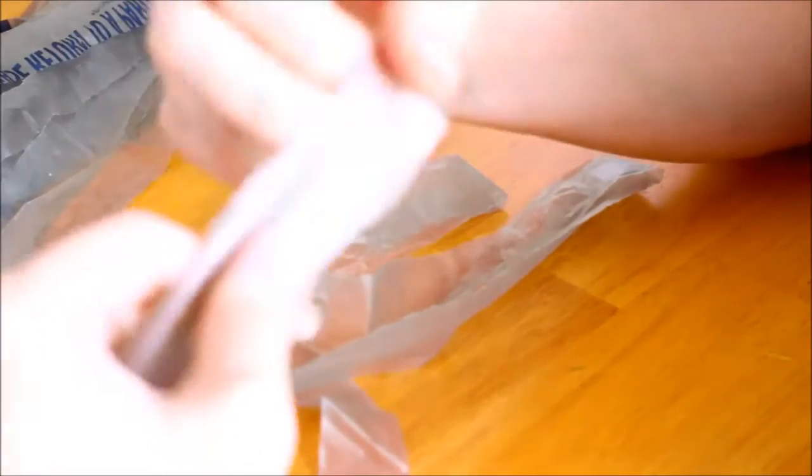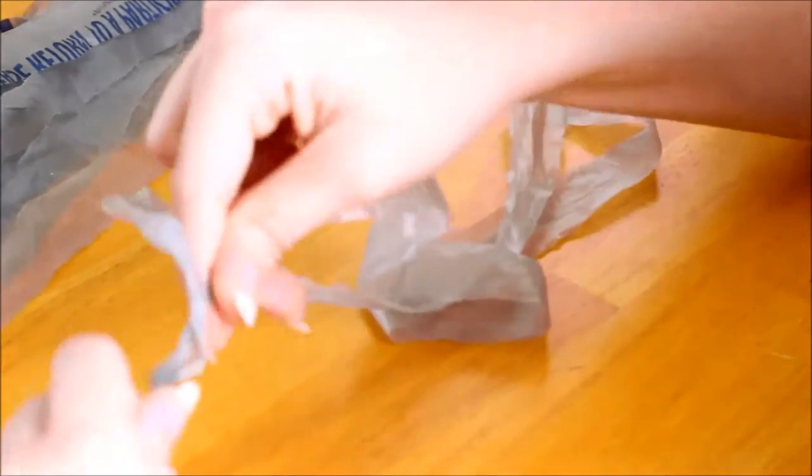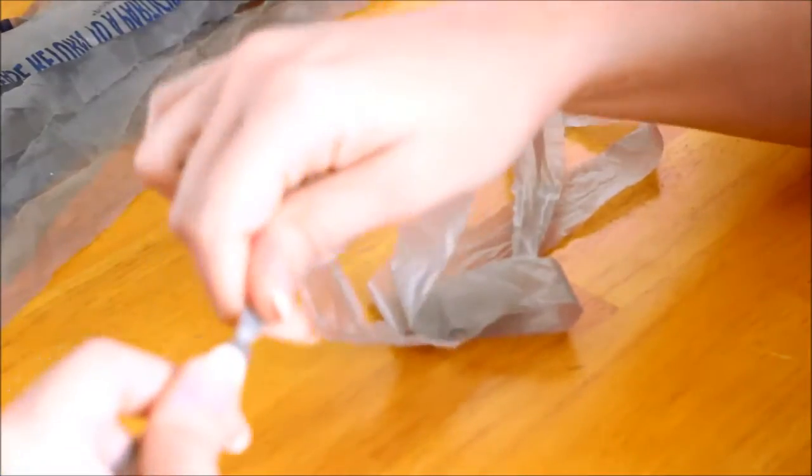As I said, we are going to kind of create a chain and put it together. So create a loop with the first one, just a small one. And with the second one, you need to pull it through. As you can see, a second loop was created and you will grab the end of your bag and pull it through. Just be gentle, you don't want to break it. Just keep pulling little by little until you create a knot. And that is pretty much it.